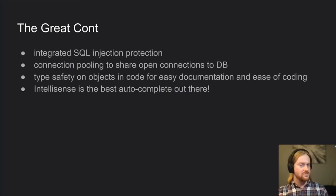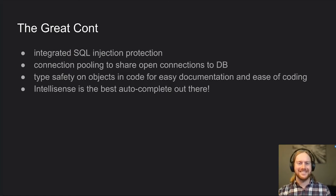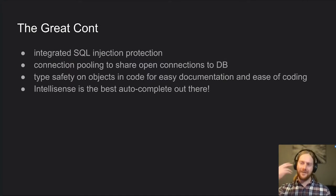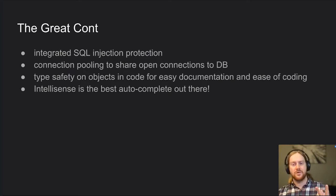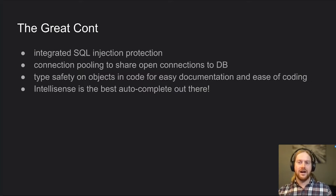Bad ORMs do not let you do raw SQL, and that's a problem. Also, as I was building the talk and doing code samples, I noticed IntelliSense is the best — Python doesn't have anything on IntelliSense, so you definitely did something right by picking C# as your career language. You can always have beautiful autocomplete. Another thing is type safety, which provides two things: it's really good for documentation, and it makes things easier for juniors, mid-levels, and even senior developers.